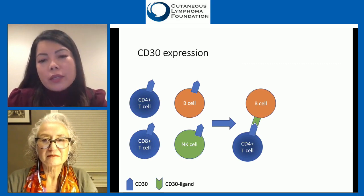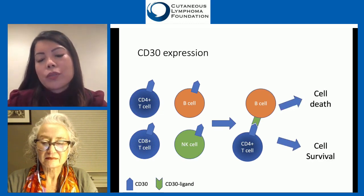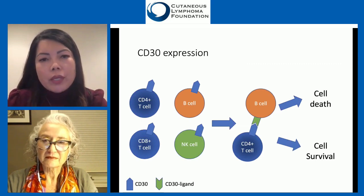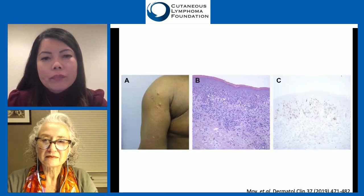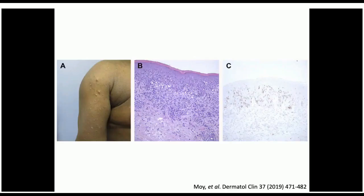Signals occur within these cells that help modulate the decision to undergo cell death or cell survival. That's a simplistic overview of what CD30 really means. CD30 is mainly a histological distinction — it was used as a way to classify these disorders.